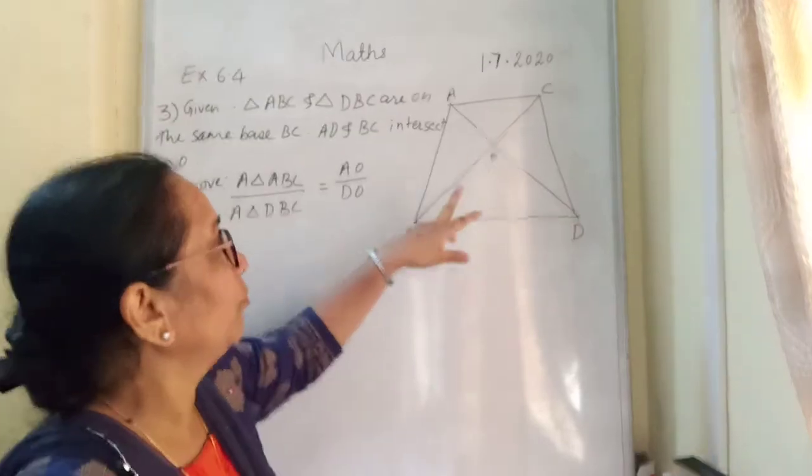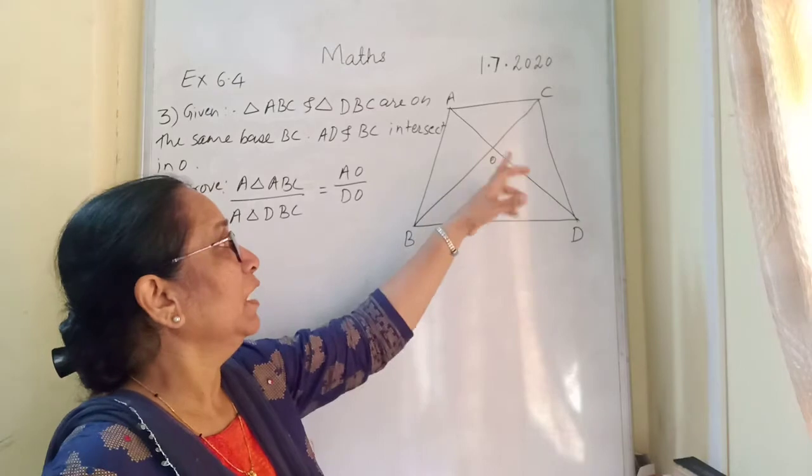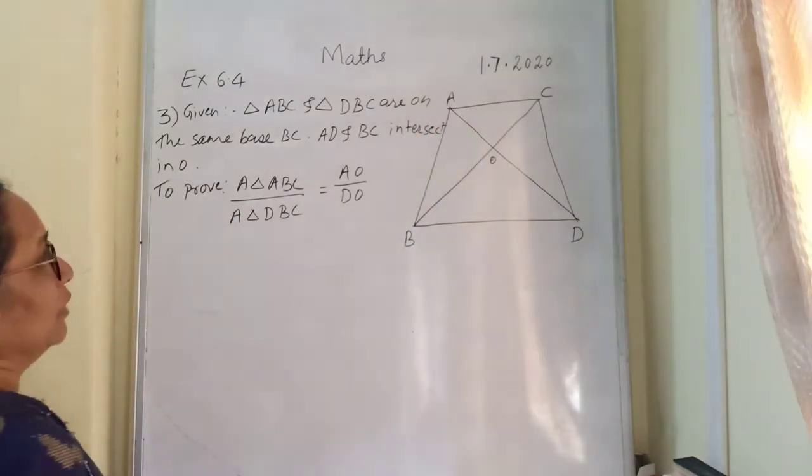Correct? We have to prove area of triangle ABC upon area of triangle DBC is equal to AO upon DO. So how we are going to do that?